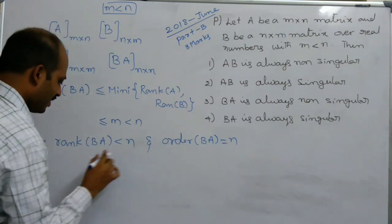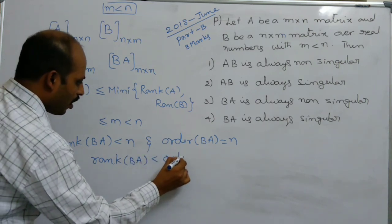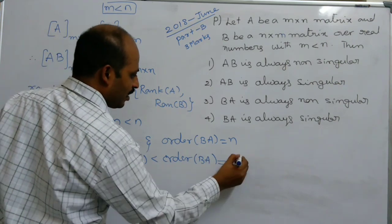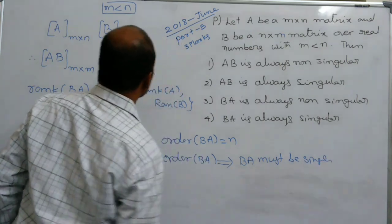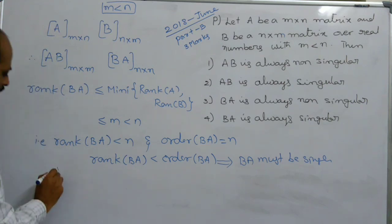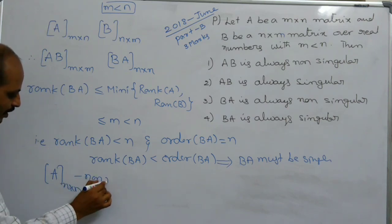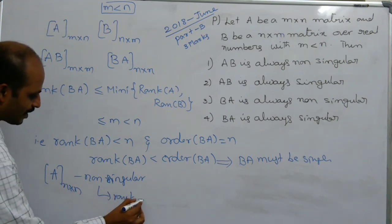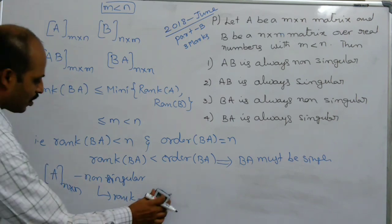From these two results, rank of BA is less than the order of BA, which means BA must be singular. We know that if A is an n×n non-singular matrix, then its rank equals n. Conversely, if A is singular, then its rank is less than n.